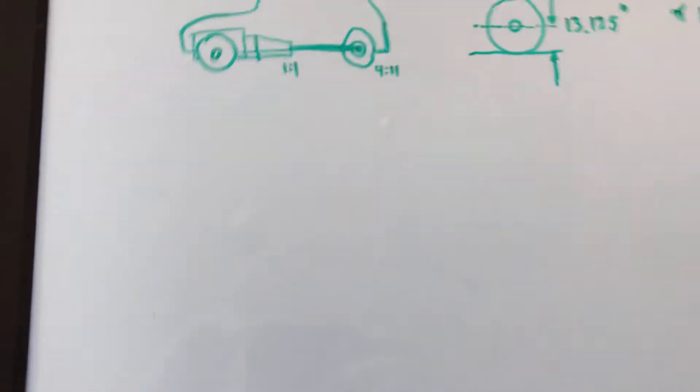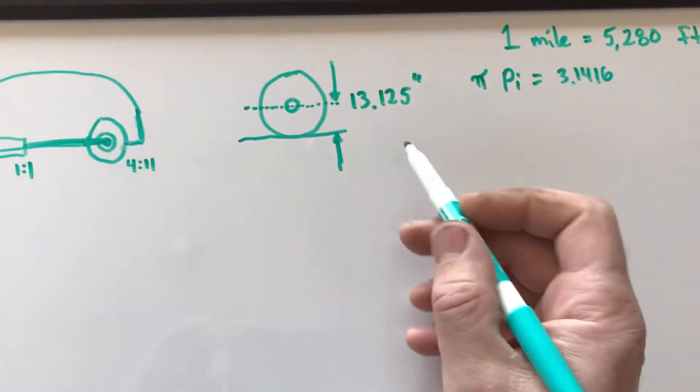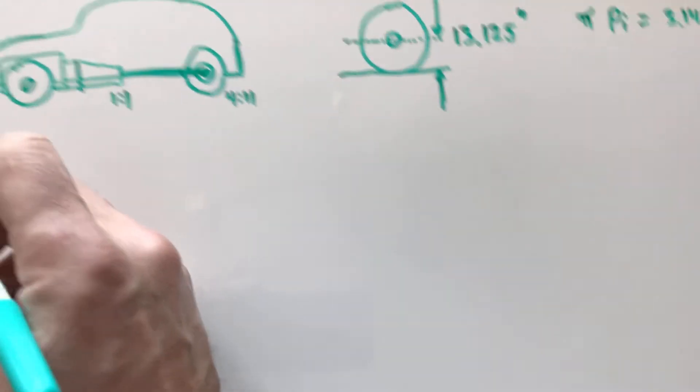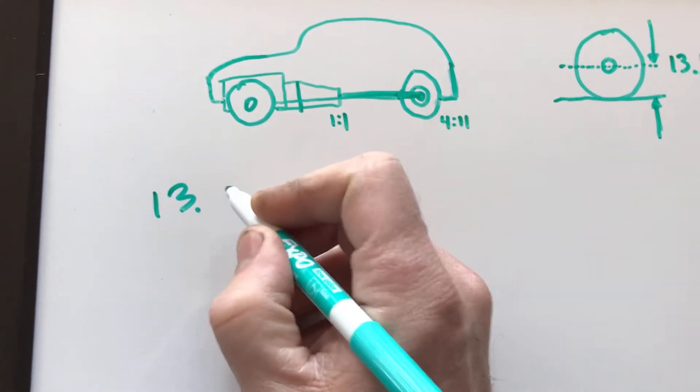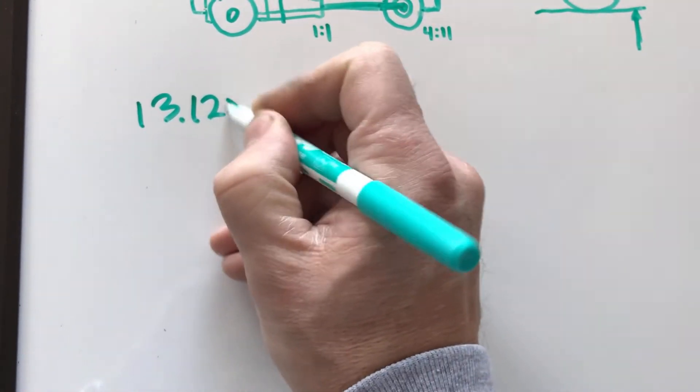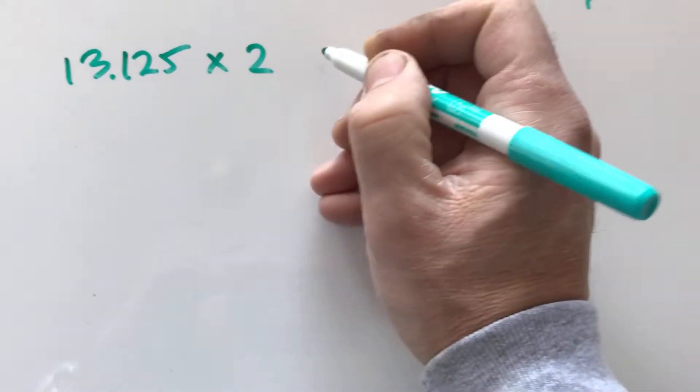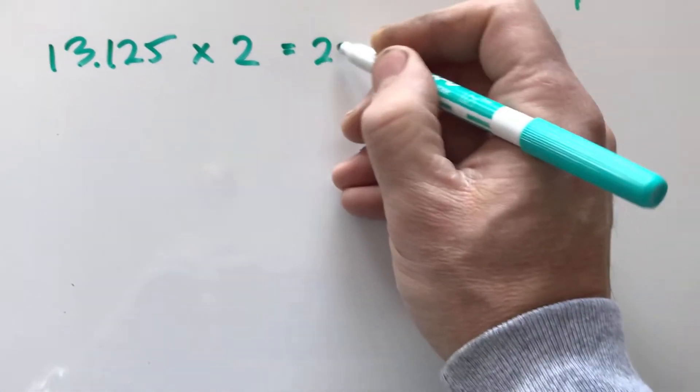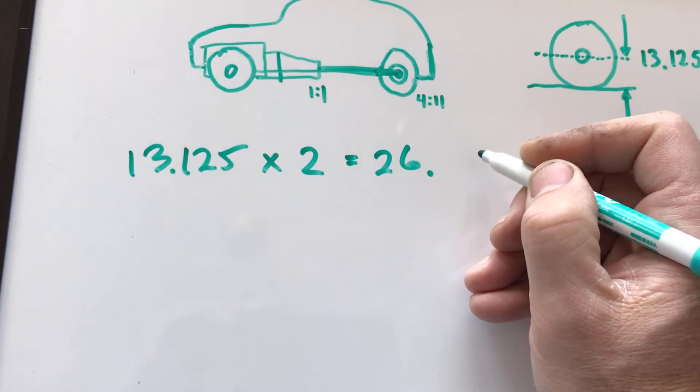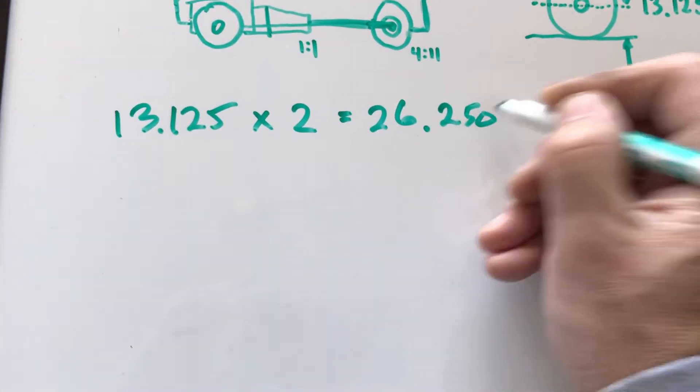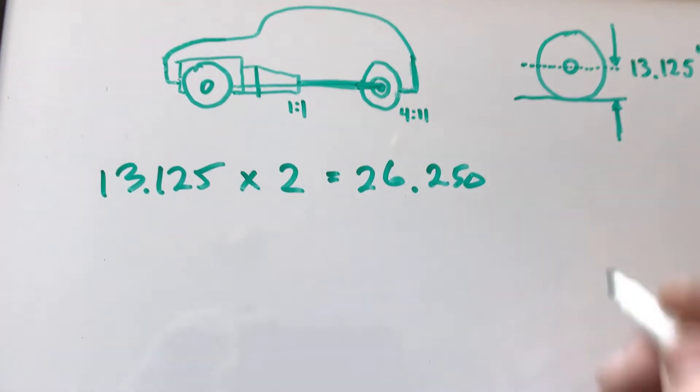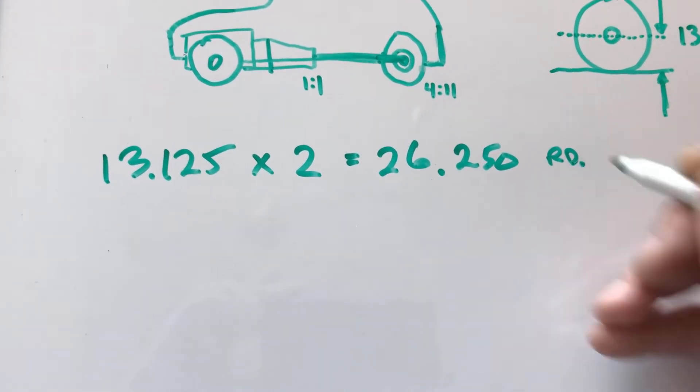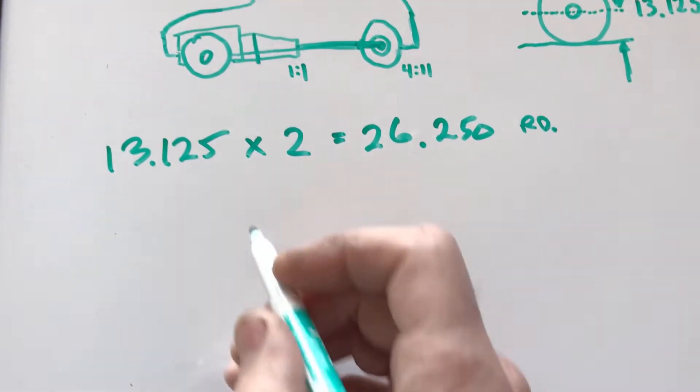The first calculation is we're going to take this measurement 13.125 times it by 2, which gives us 26.250. That is our rolling diameter.